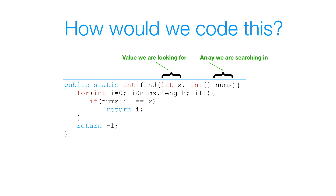Inside our for loop, we have a conditional that checks if nums of i is equal to our data x. All that says is if the value at index i is equal to our data. If it is, we'll return the index. If it isn't, we'll return negative 1. The reason we return negative 1 is because an array starts at index 0, so it can never be negative 1. So if we return negative 1, we know we did not find that element.